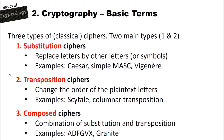Then we have the second type of ciphers, which are the transposition ciphers. These change the order of the plaintext letters, but the plaintext alphabet is the same as the ciphertext alphabet — only the position is changed. Examples for this are the scytale cipher and the columnar transposition cipher. The third type of ciphers are the composed ciphers, which are a combination of different substitution ciphers, different transposition ciphers, or a combination of substitution and transposition ciphers. Examples for this are the ADFGVX cipher and the Granit cipher, which was used in the Cold War in Germany.